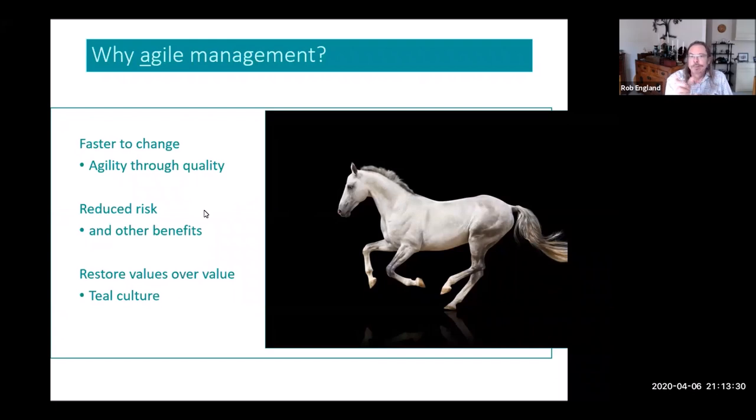So we talk about agile management and we're trying to create an environment that's faster to change how we work by creating agility through increasing the quality, the effectiveness, the value of what we do and reducing risk. So this is a huge thing for management, especially middle managers to understand is the reduction in risk.